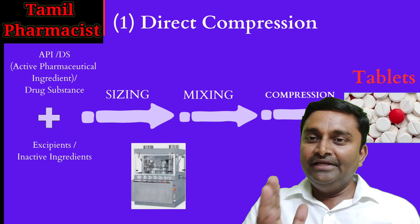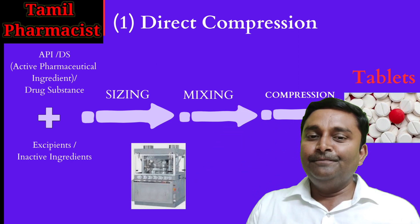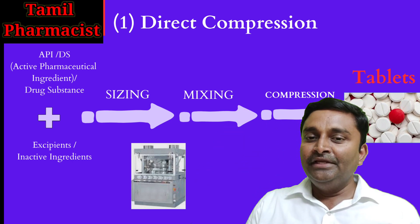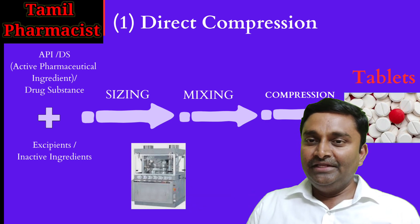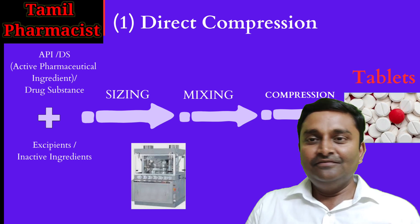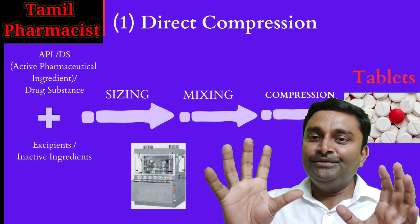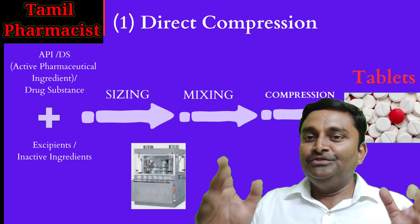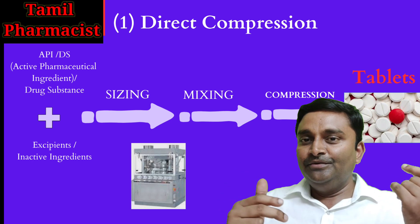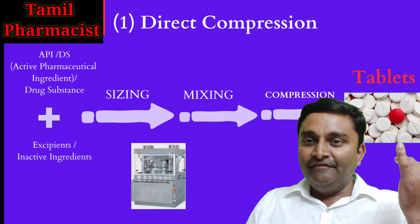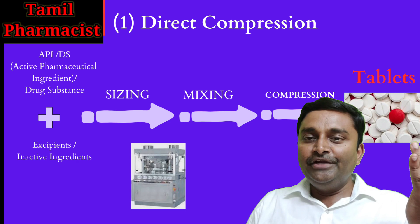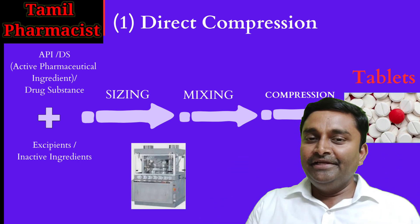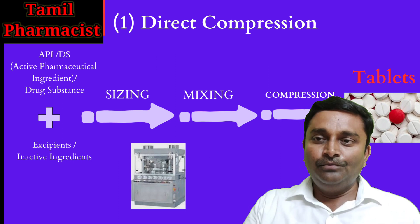When mixing is done, the blend is converted into tablets by the compression process. If there is an uncoated tablet, no coating is applied. Whereas in coated tablets, you can use film coating or sugar coating. Sugar coating gives a sweetener effect, while film coating provides protection and elegance. This is the overall direct compression process.